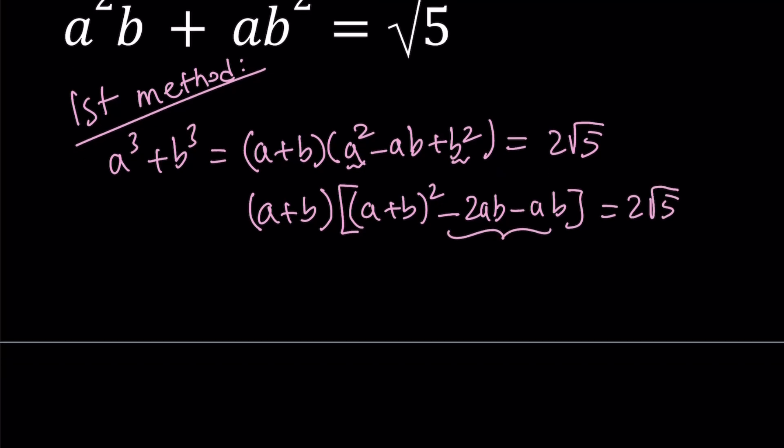Now, here we have -2 - 1, that is equal to -3. So we can basically write this as (a+b)((a+b)² - 3ab). Awesome.